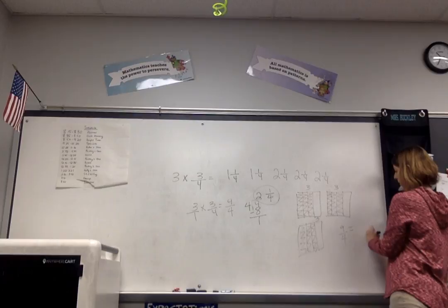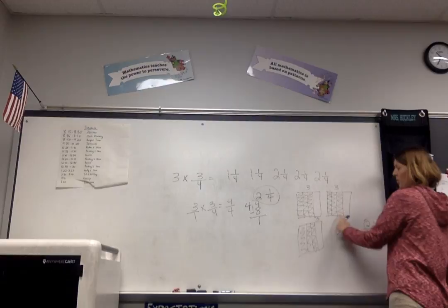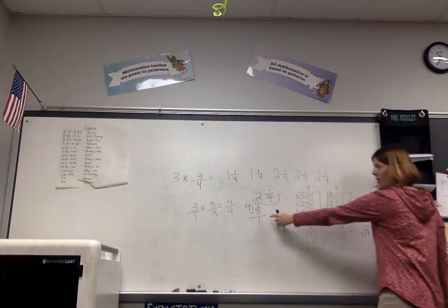Okay, perfect. I really like how you describe that. So we could count it as one-fourths, two-fourths, three-fourths, four-fourths, five-fourths, six-fourths, seven-fourths, eight-fourths, nine-fourths. This is the same amount that we got over here, nine-fourths, and we know we don't want it to...